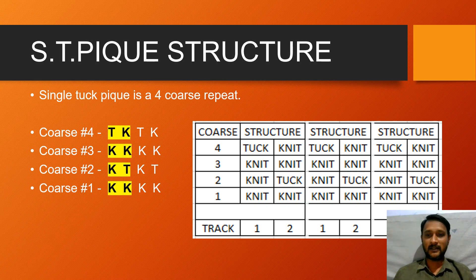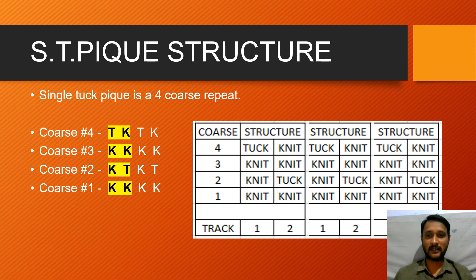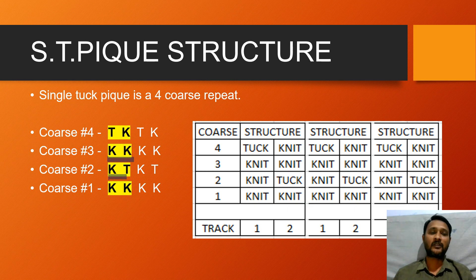In my previous video, as I explained, single tuck PQ fabric is a 4 course repeat and it is a 2 track design. Course number 1 is knit-knit. Course number 2 is knit-tuck. Course number 3 is again knit-knit. And course number 4 is the vice versa of course number 2 — after course number 2, it is tuck-knit.